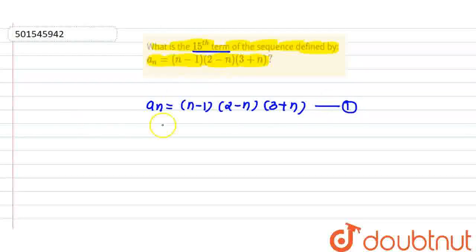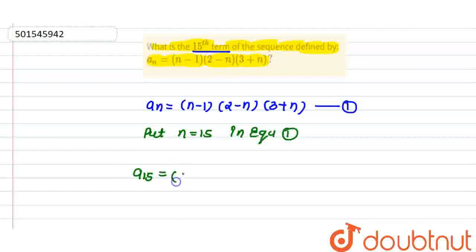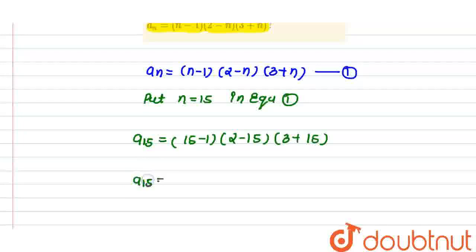Now we need the 15th term, that is a15 value. So we need to put n is equal to 15 in equation 1. In equation 1, we will find the 15th term, so what is the 15th term? The nth term is equal to 15 minus 1 into 2 minus 15 into 3 plus 15.